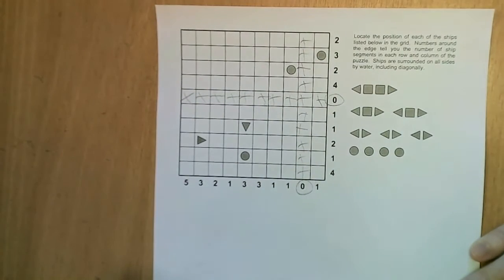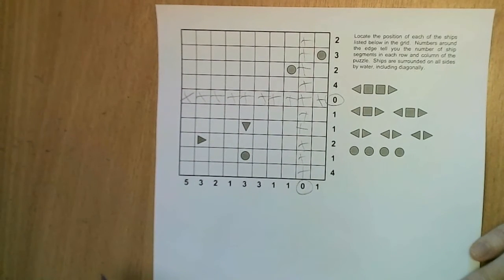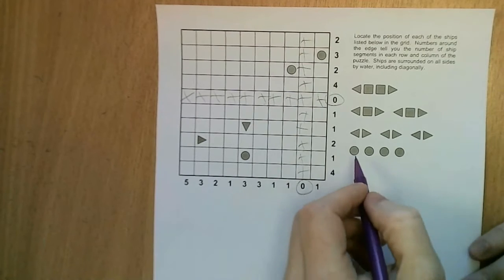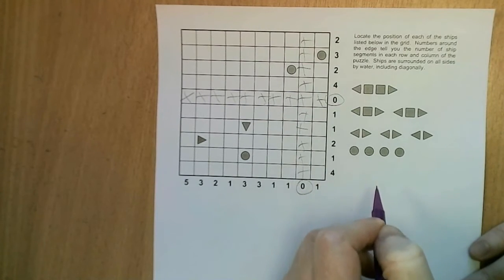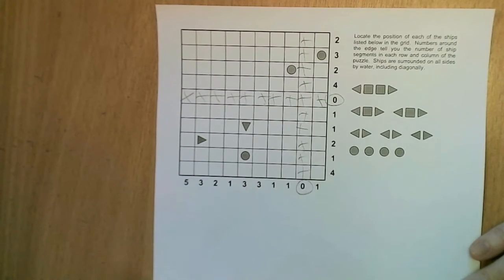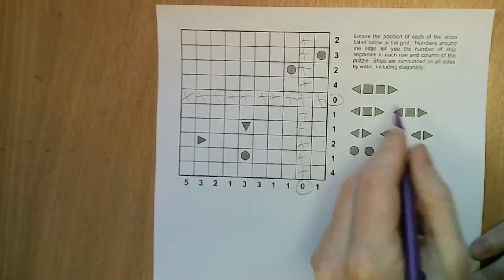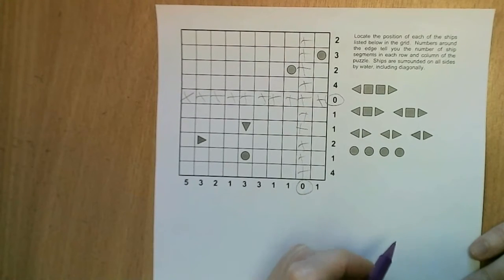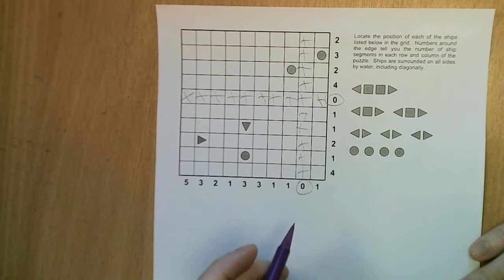And next we're going to look at the ship segments that are already placed in the grid. Now we can see that with the way the puzzle is displayed, ships of just a single piece, often called submarines, are represented as a circle and none of the other ships have circles. Therefore we know those are complete ships and therefore we can surround them with water.